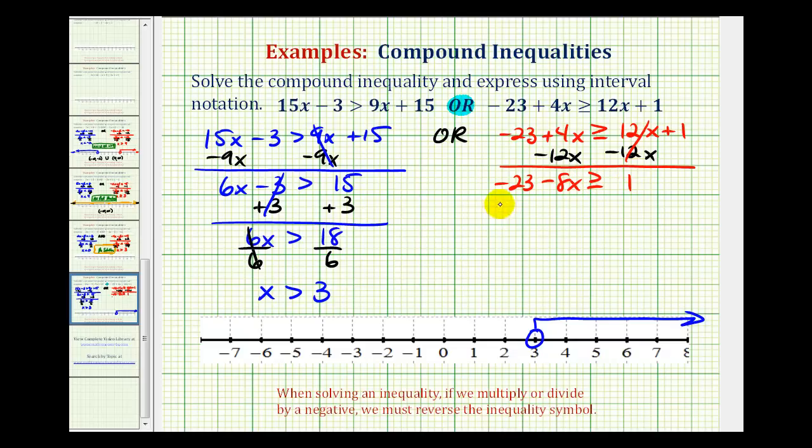Now we'll add 23 to both sides. This would be zero. We have negative 8x is greater than or equal to 24. The last step here is to divide by negative 8.